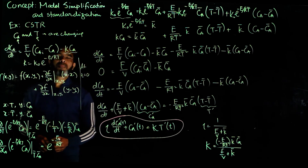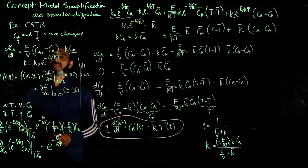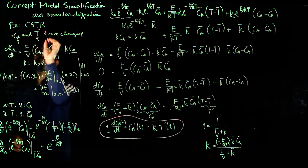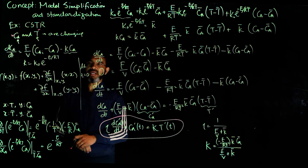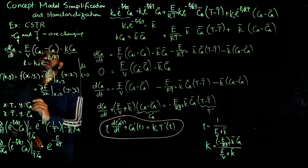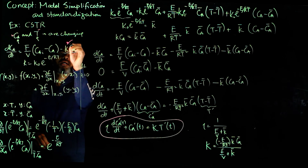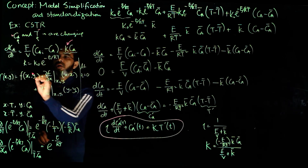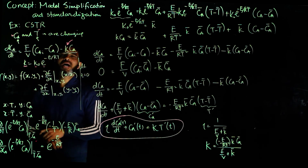We have part of the model equation that relates the composition and temperature, where both composition and temperature are changing due to a change in the coolant flow rate. We drafted this equation for composition where the temperature term was implicit in the K term, where K equals K-naught times exponential of negative E over RT.